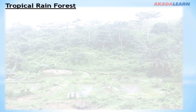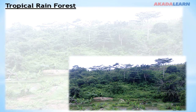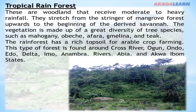Tropical rainforests are woodlands that receive moderate to heavy rainfall. They stretch from the fringe of the mangrove forest upwards to the beginning of the derived savannah. The vegetation is made up of great diversity of tree species such as Mahogany, Obeche, Afara, Milicia and Teak. The rainforest has rich topsoil for arable crop farming. This type of forest is found around Cross River state.